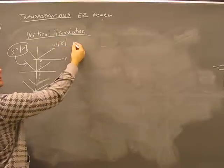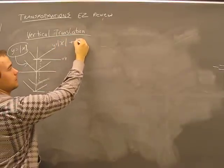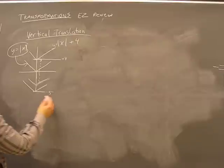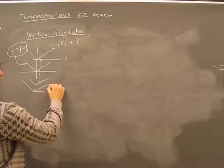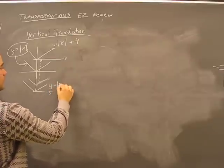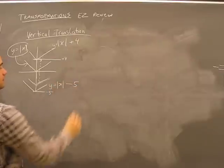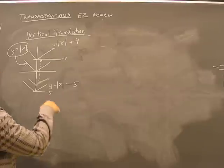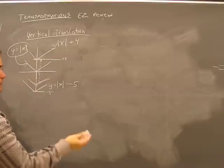So this is y equals absolute value of x plus four, mysteriously. And this one would be—I bet you're guessing it right now—y equals the absolute value of x minus five. It does not take a rocket scientist to figure this out. However, I did it this way because I want to